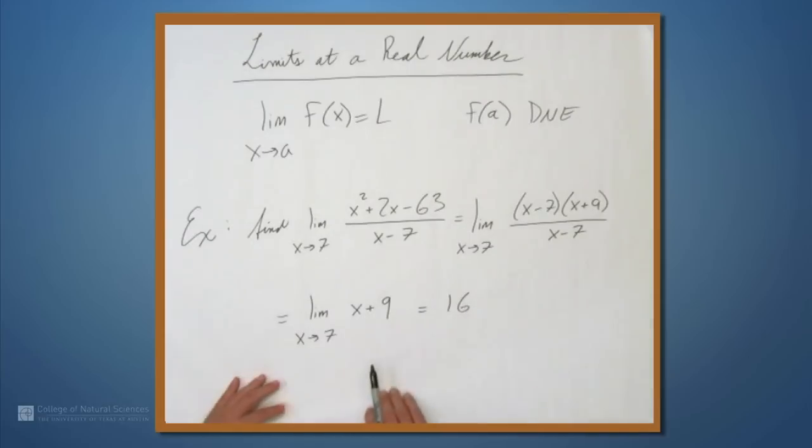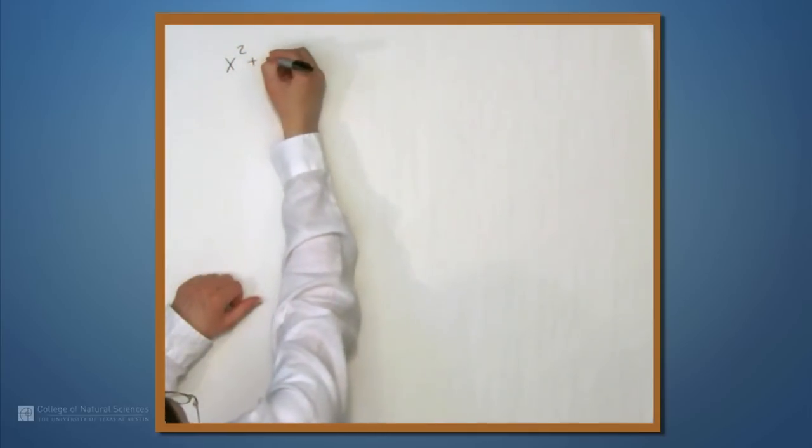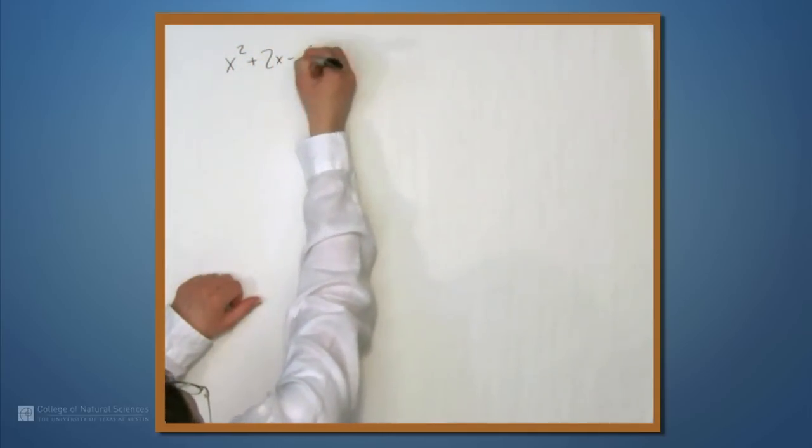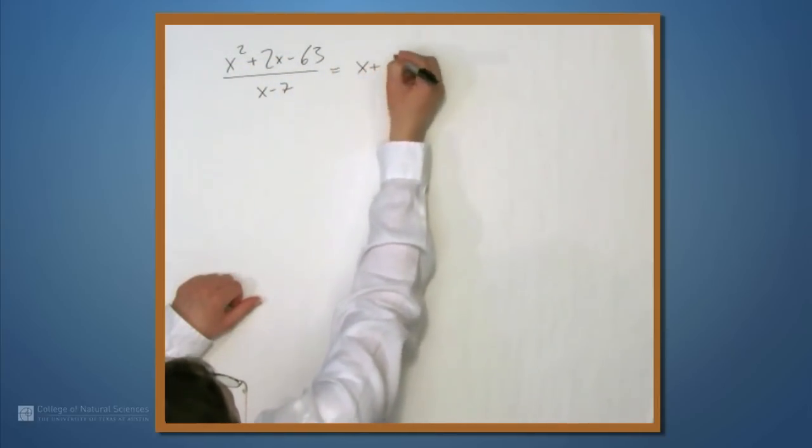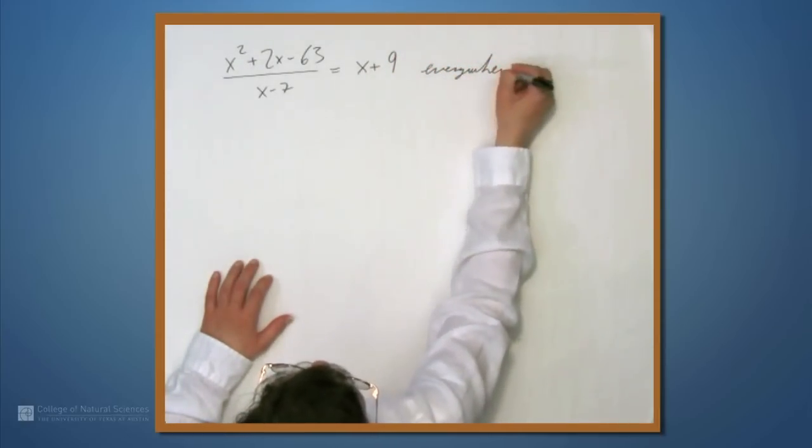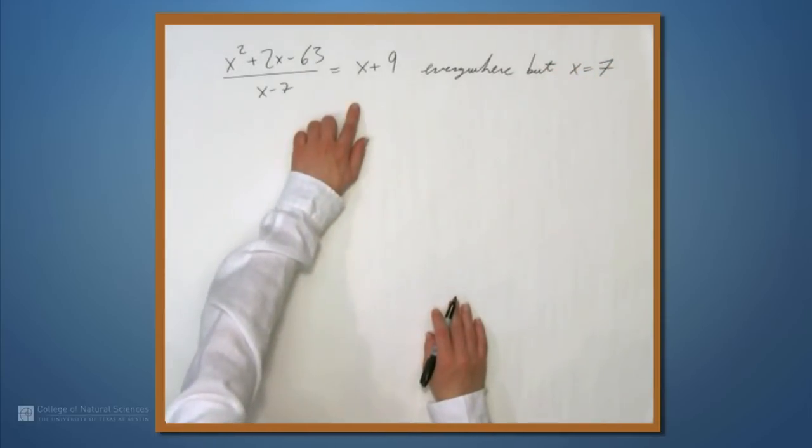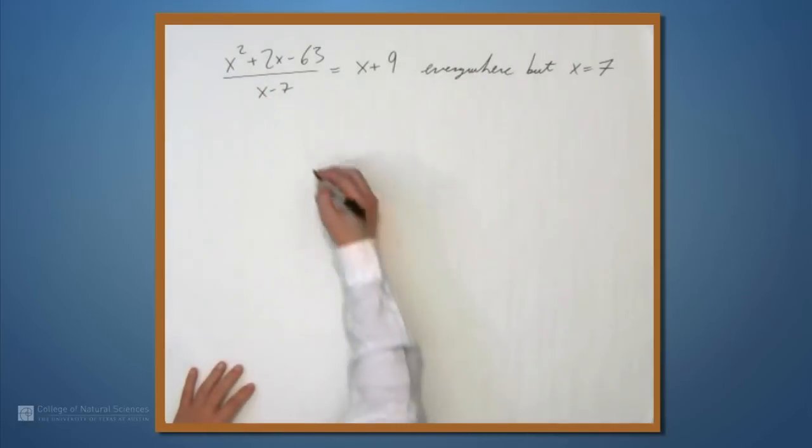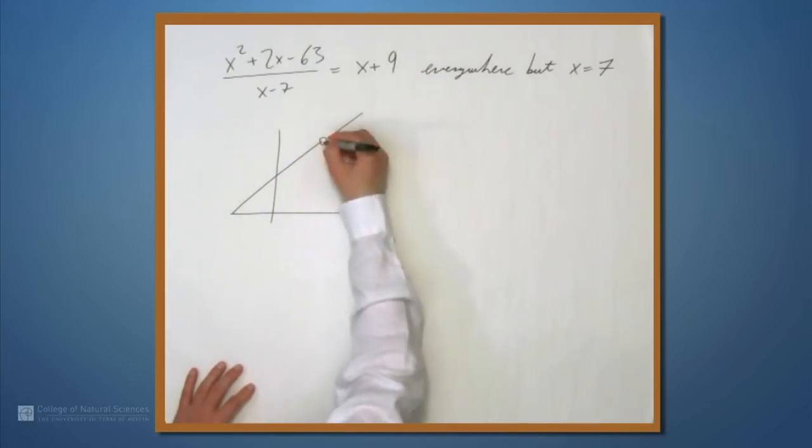So what we just showed is that x² plus 2x minus 63 over x minus 7 equals x plus 9 everywhere but at x equals 7. These two things are equal except when x equals 7 when this thing is undefined. So the graph of the original function is something like this. It's just a line. It's the line x plus 9 with a hole at 7.